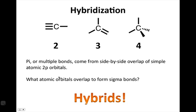So just to hit this slide one more time, pi bonds come from side-by-side overlap of the simple atomic 2p orbitals, but the orbitals that overlap to form sigma bonds in organic molecules are the hybrids. And we'll see the importance of the hybrids at the end of this discussion and how we can use them to think about reactivity and talk about the reactivity of organic molecules.